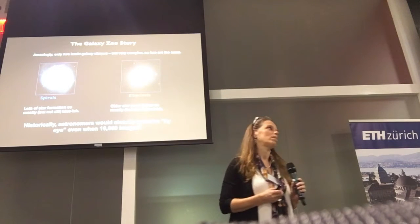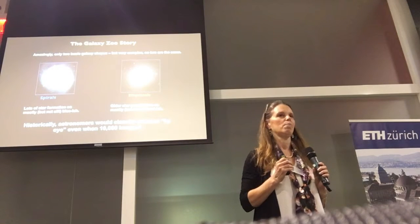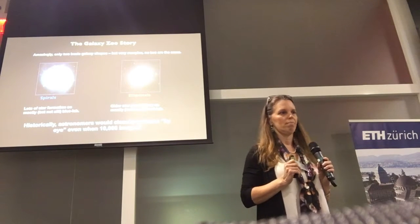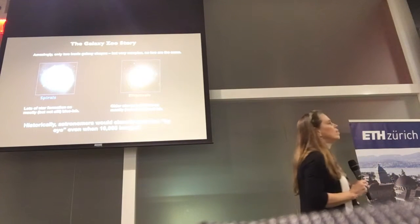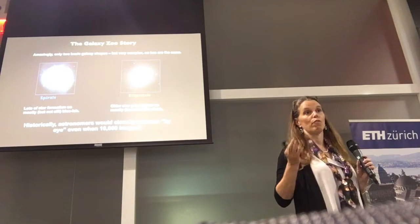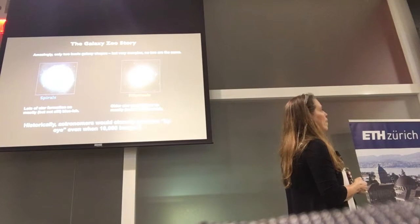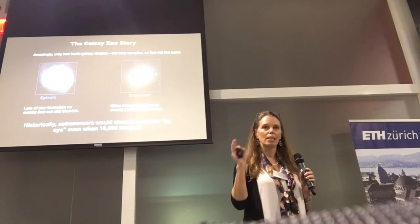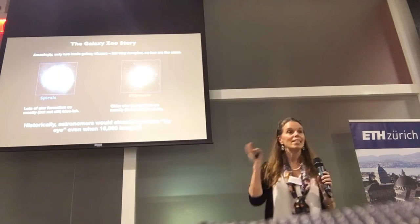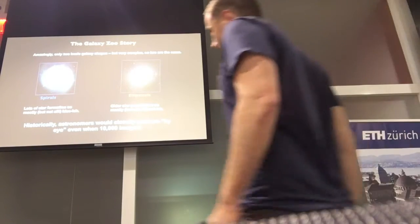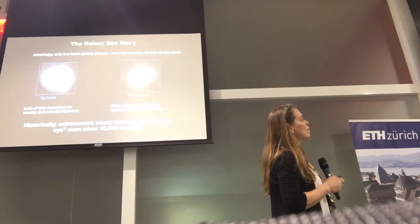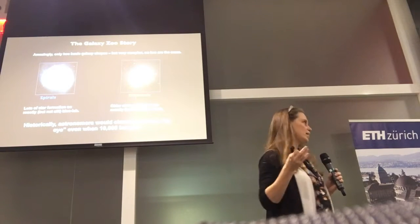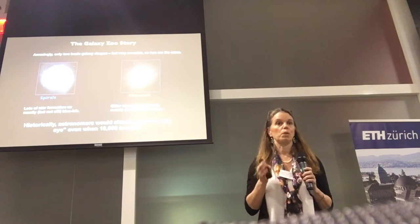The Galaxy Zoo story started with a seemingly innocent question about galaxy evolution: what fraction of galaxies are blue ellipticals? As it turns out, galaxies have basically two types of morphologies or shapes. On the left-hand side, we see a spiral — typically blue because there's a lot of star formation going on. On the right-hand side, we see a smoother elliptical galaxy, and they tend to be red because their frantic period of star formation has ended. They're known colloquially as red and dead.